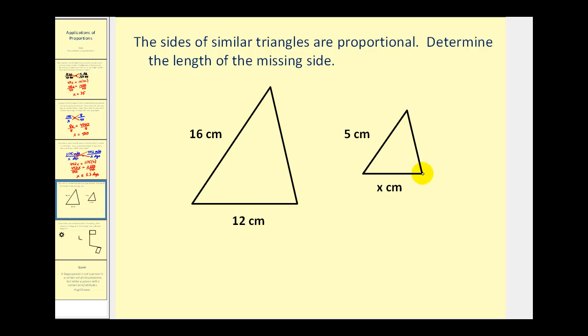Here we have a geometry example. These two triangles are similar, meaning they're the same shape but different sizes. And similar triangles are proportional, which means the ratio of corresponding sides are equal. So to determine the length of this missing side here, we'll set up two ratios comparing the larger triangle to the smaller triangle.